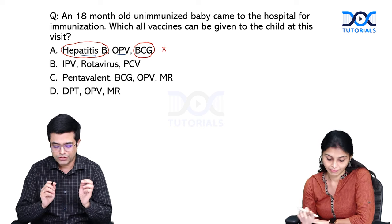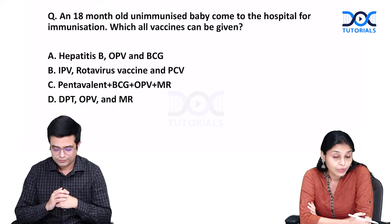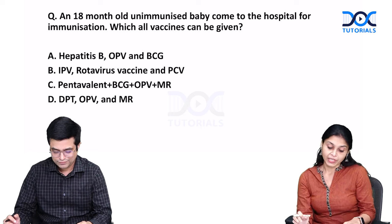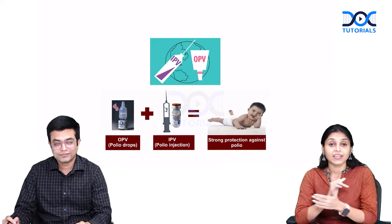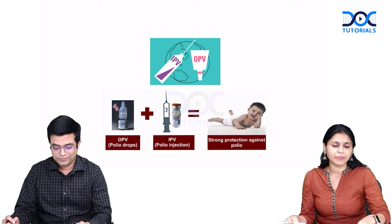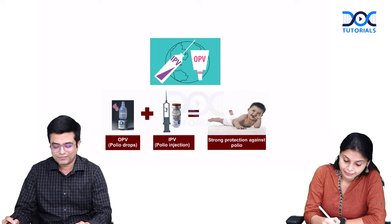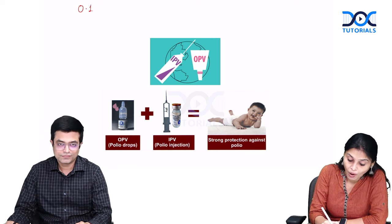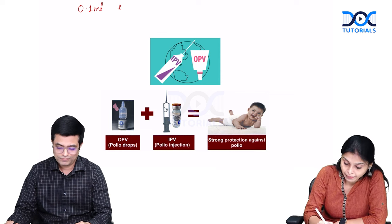Moving to option B - IPV, rotavirus vaccine, and PCV. Let us start with IPV. IPV is inactivated polio vaccine. The dose is 0.1 ml given intradermally.